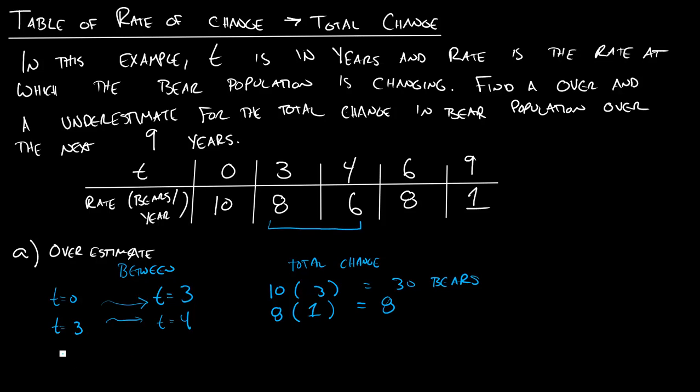Now, if we're going from t equals 4 to t equals 6, let's be careful here. So this is 2 years. This is happening over 2 years, but what rate are we going to use? Remember, we want an overestimate. So we can either pick 6 or 8, and since we want an overestimate, we're going to pick the larger estimate of the rate of change of bears. So we're going to say over those 2 years, our population increases by 16 bears.